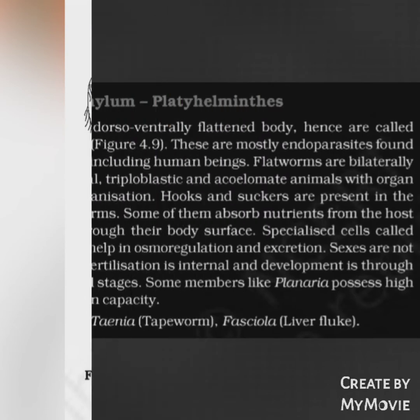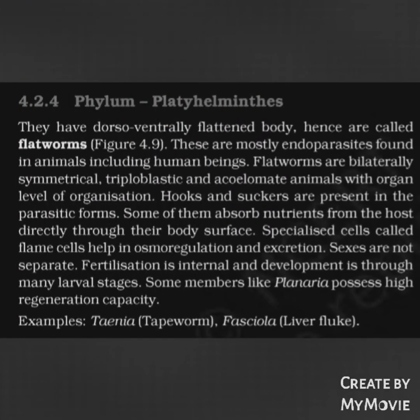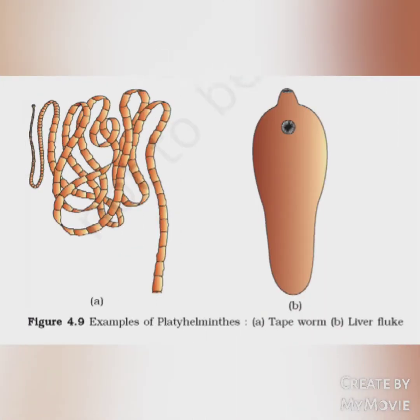Phylum Platyhelminthes: They have a dorsoventrally flattened body, hence are called flatworms. These are mostly endoparasites found in animals including human beings. Flatworms are bilaterally symmetrical, triploblastic, and acoelomate animals with organ level of organization. Hooks and suckers are present in parasitic forms. Some absorb nutrients directly through their body surface. Specialized cells called flame cells help in osmoregulation and excretion. Sexes are not separate. Fertilization is internal and development is through many larval stages. Some members like Planaria possess high regeneration capacity. Examples: Taenia (tapeworm) and Fasciola (liver fluke).